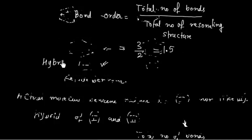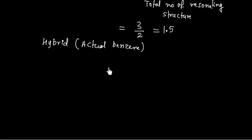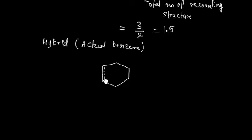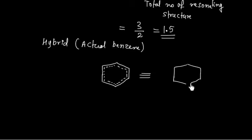Similarly for all bonds, we have bond order of 1.5 everywhere. So the hybrid, which is the actual molecule, may look something like this. We have a sigma frame and then a half bond — one bond plus half bond — because bond order is 1.5. So everywhere we have one plus half bond. That means the electron cloud is spread throughout all six carbon atoms. Sometimes this structure is also written by making a circle inside the benzene ring.